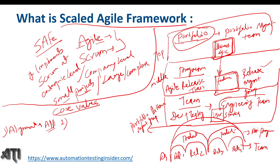The second core value is Built-in Quality. In agile, we focus on rapid delivery of software to the customer, but along with delivering the software we should also maintain quality and add business value to the customer. That is what is meant by built-in quality.